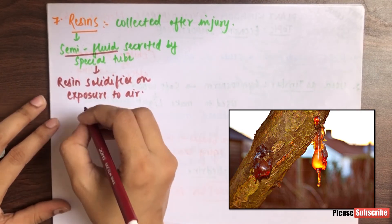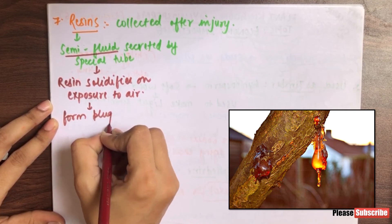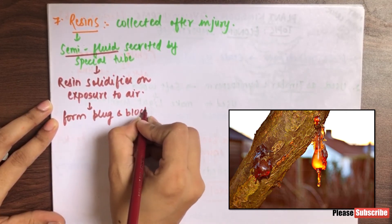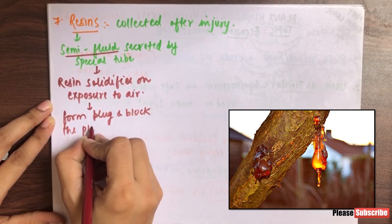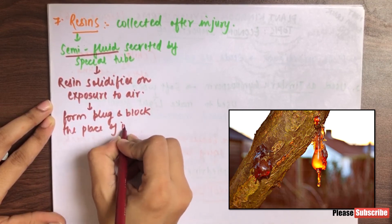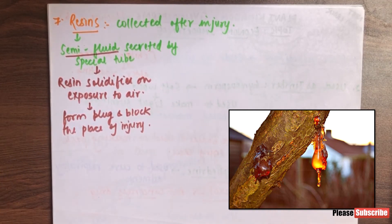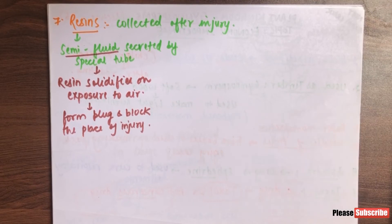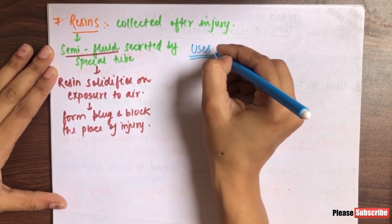When resin solidifies, it forms a plug at the place of injury — it blocks the place of injury — so that no bacteria or fungus can enter inside and cause infection in the plant. So that is what resin does. It has very many uses; it is used in many things. Let us look at its uses.